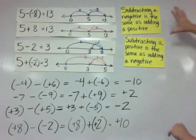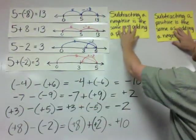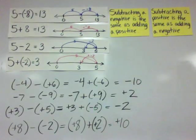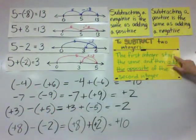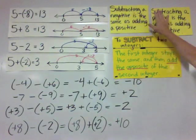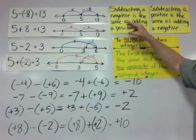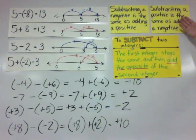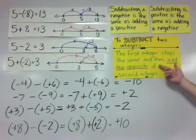Now, a lot of textbooks describe the rule slightly differently. They say: to subtract two integers, the first integer stays the same — and sure enough, that happened every single time — and then add the opposite of the second integer. So you have a choice: you can think of it as two little rules — subtracting a negative is the same as adding a positive, and subtracting a positive is the same as adding a negative — or you can think of it as: the first integer stays the same and you add the opposite of the second integer.